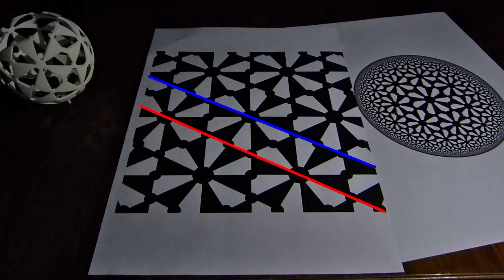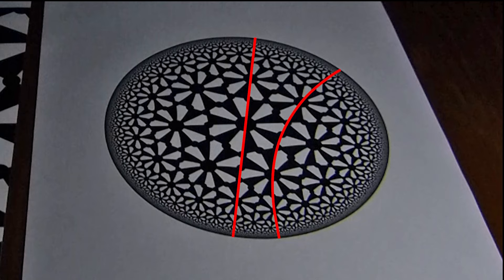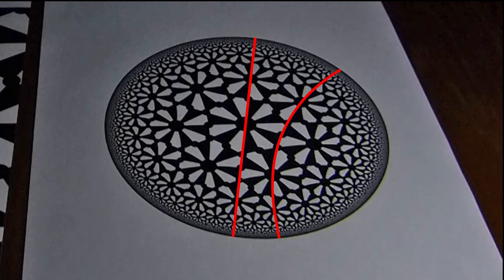In the Poincaré disk model, the geodesics are straight lines through the center, or arcs of circles that are perpendicular to the boundary of the disk. Here, the string doesn't tell us where the geodesics are. Again, this is because we can only see the distorted projection, not the true geometry.